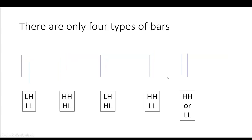So the four types of bars are these: you can have a lower high and a lower low — that's a down bar. You can have a higher high and a higher low to the previous bar — that's an up bar. You can have a lower high and a higher low — that's an inside bar. And then you can have a higher high and a lower low — that's an outside bar. I count my inside bar as being strictly lower high, strictly higher low, and pretty much anything else is an outside bar.